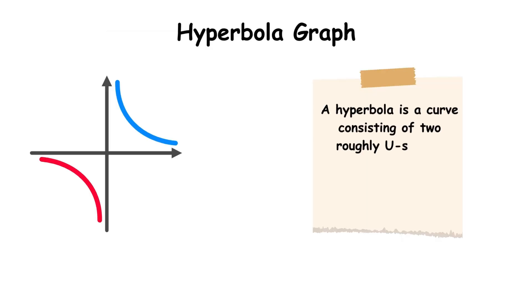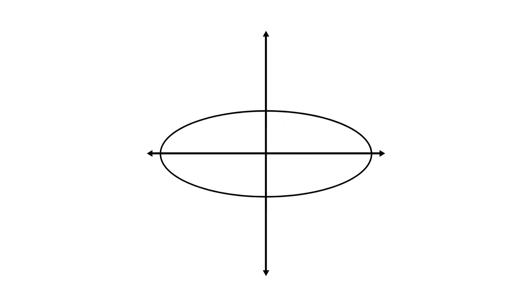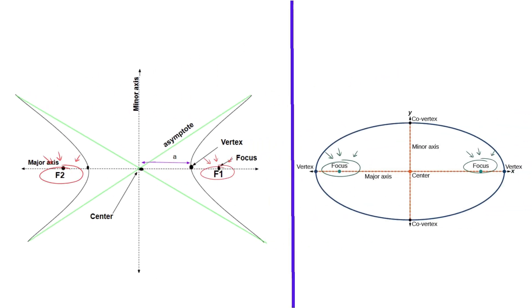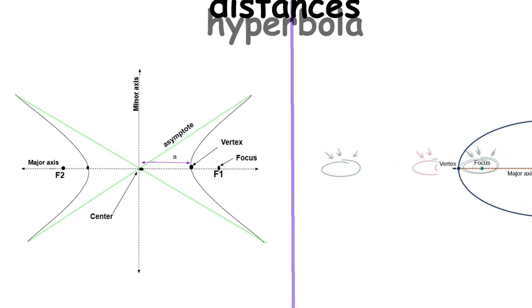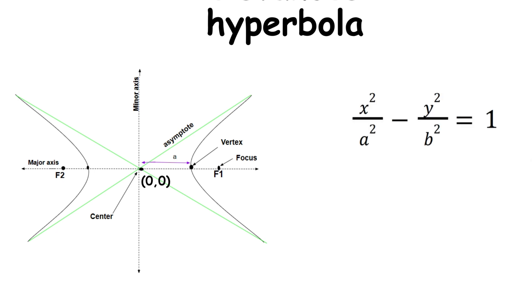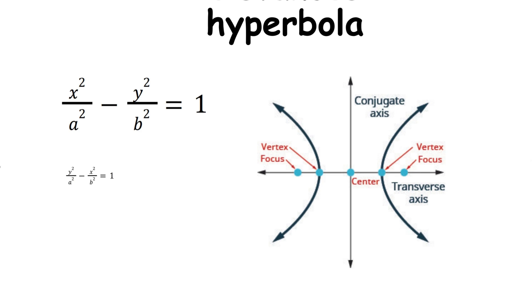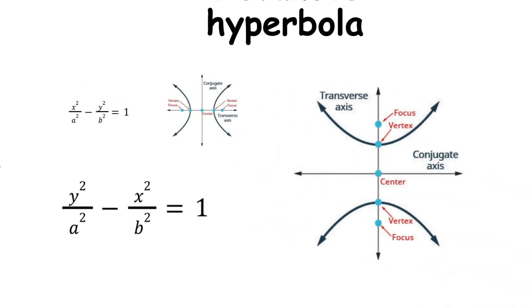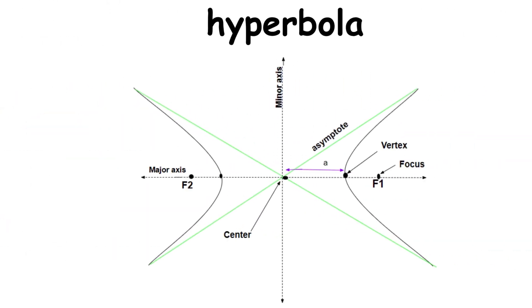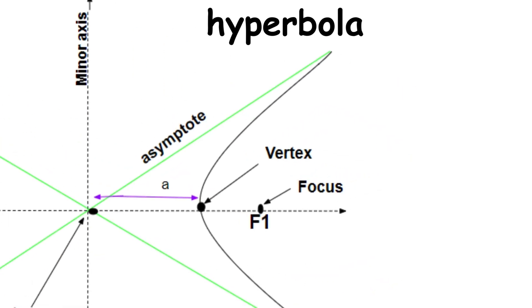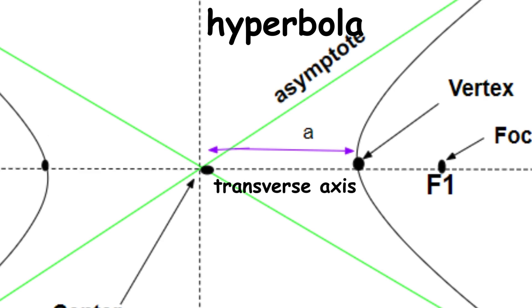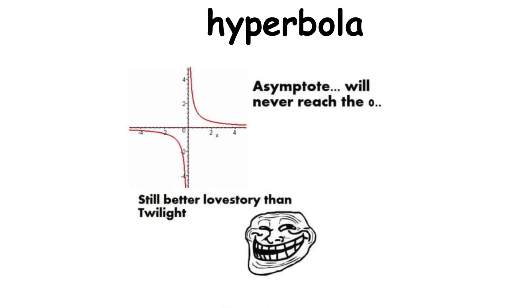A hyperbola is a curve consisting of two roughly U-shaped branches bending away from each other. It can be defined as a conic section, like the parabola and ellipse, or using two focal points — but using the absolute difference of distances rather than the sum. A hyperbola centered at the origin has equations: x squared over a squared minus y squared over b squared equals 1, or y squared over a squared minus x squared over b squared equals 1. If x is in the first term, the hyperbola opens sideways; if y is in the first term, it opens up and down. The two points closest to the center are the vertices, the segment between them is the transverse axis, and the hyperbola has two asymptotes — lines approached but never reached as the curve goes to infinity.